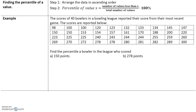To find the percentile of a data value, there are two steps. Step 1: arrange the data in ascending order — ascending means from lowest to highest value. The percentile of a value X is the number of values that are less than X divided by the total number of values, times 100%. For example, these are the scores of 40 bowlers in a bowling league. Find the percentile of a bowler who scored 150 points — in other words, what percent of bowlers did this bowler perform better than?